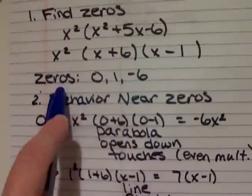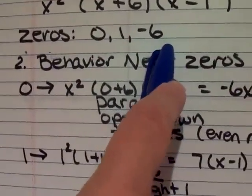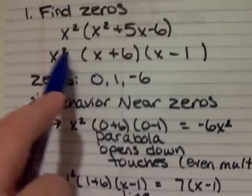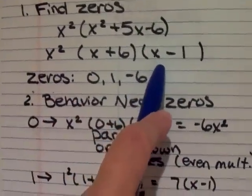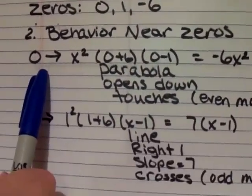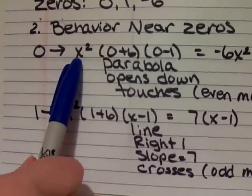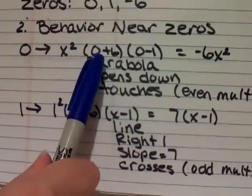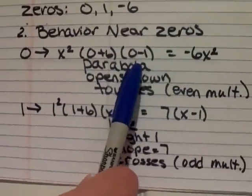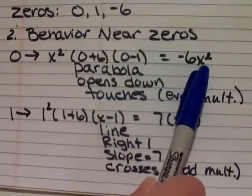Now to find the behaviors of the graph near those zeros, we need to insert those into the equation except in the part that will make it equal to 0. So when we're looking at the behavior near 0, we are not going to substitute 0 in the x squared because that would make it 0. We're going to substitute it in the other parts. So we have 0 plus 6 and 0 minus 1. And that leaves us with a negative 6x squared.